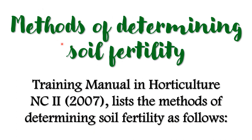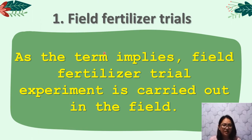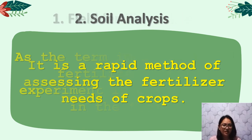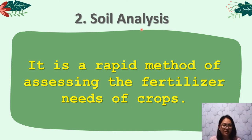Now let's move on to the methods of determining soil fertility. The Training Manual in Horticulture Institute (2007) lists the methods of determining soil fertility as follows. Number one, field fertilizer trials — as the term implies, this experiment is carried out in the field and could be conducted in different places under different seasons. Number two, soil analysis — it is a rapid method of assessing the fertilizer needs of crops. The principle involved is that the amounts of available nutrients in the soil are directly related, up to a critical point, with the growth and yield of the crop.